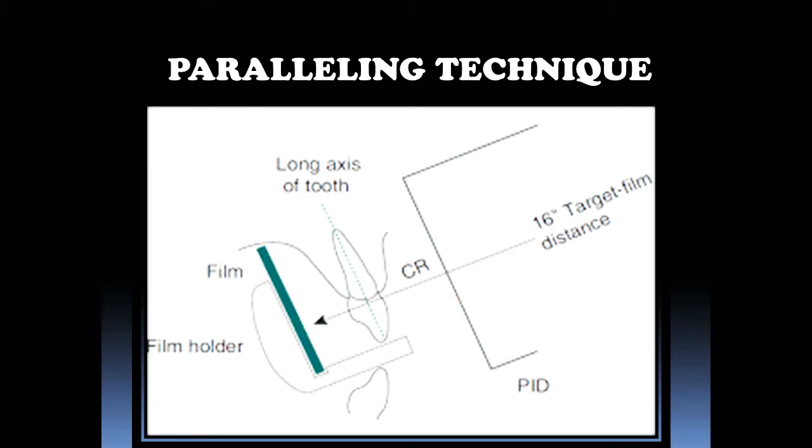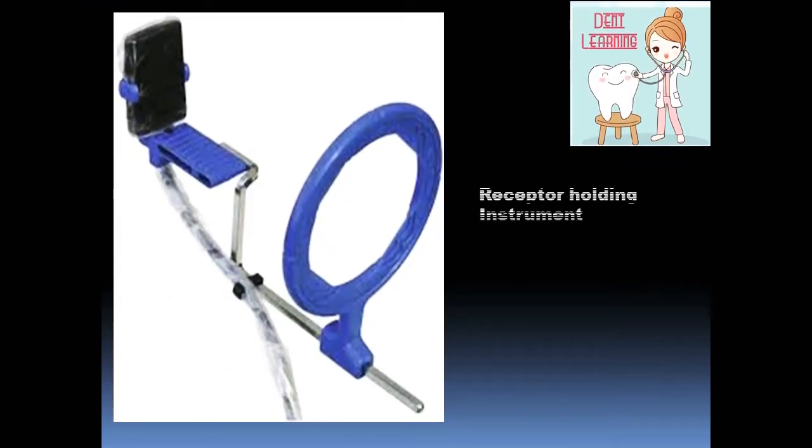Now I'll show you in the next picture—the film holder instrument. That is very important in paralleling: the receptor holding instrument. You can see here, this is the bite plane, and this is the film holding device. This is the circular collimator.